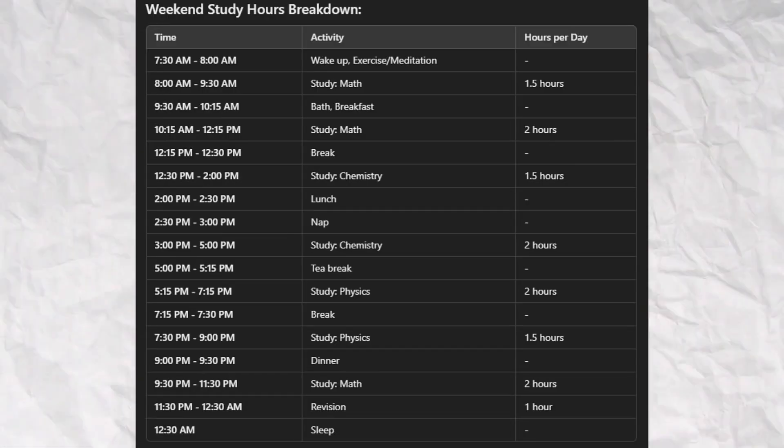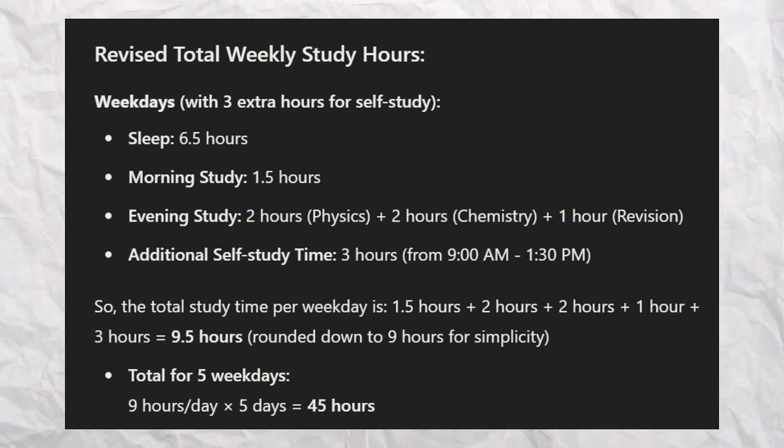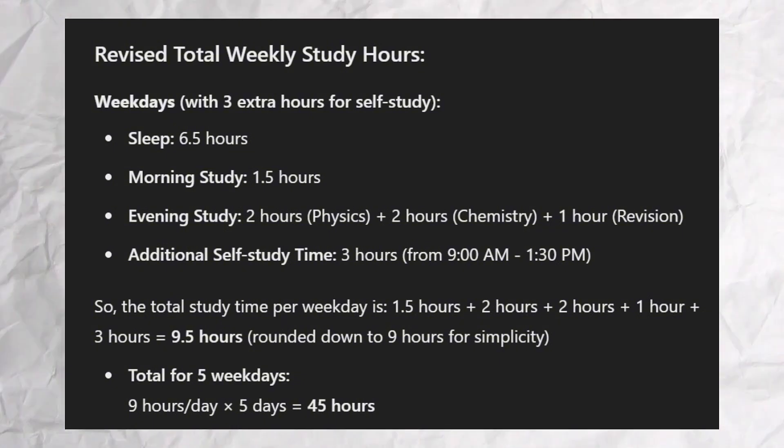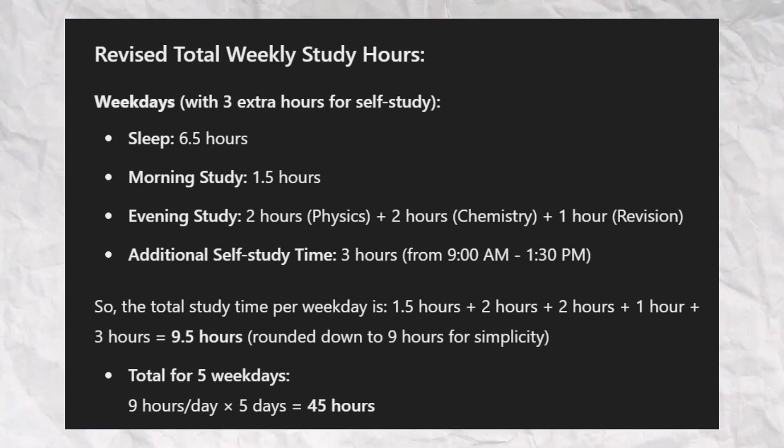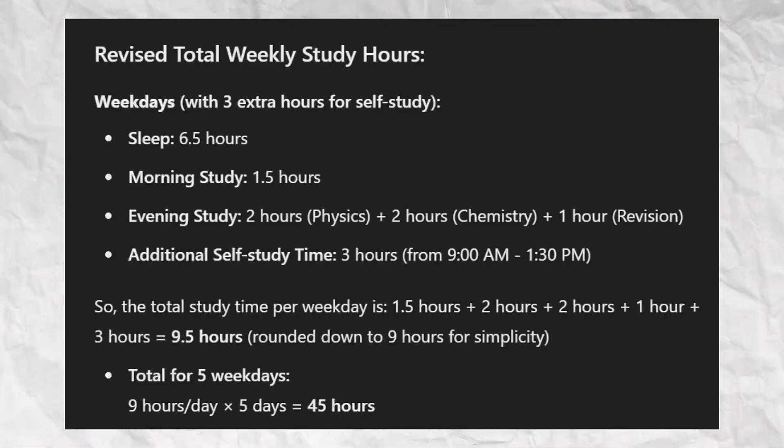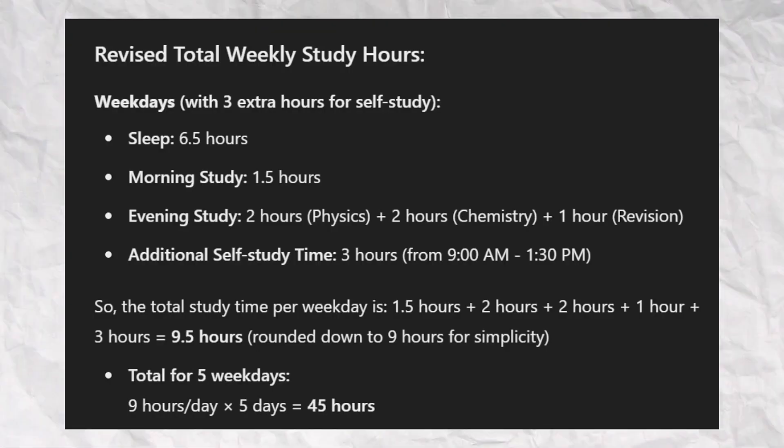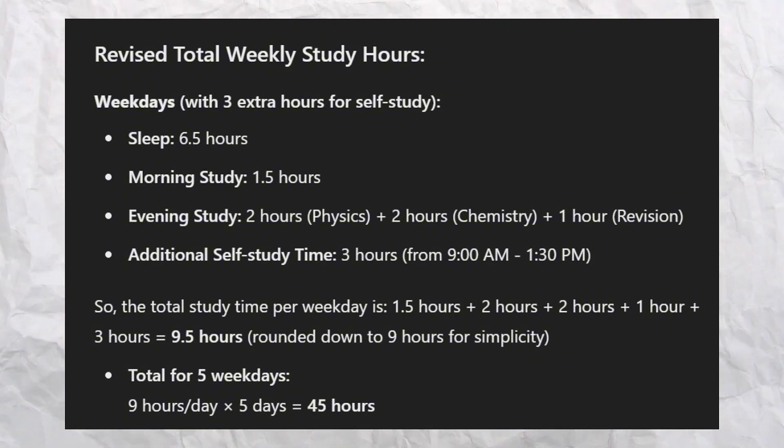For those who do self-study and don't go to any coaching center, the weekends will be the same. I'm assuming your school time is 9 to 1:30, so instead of finishing at 5:30, you get three extra hours. Morning study is the same — one and a half hours. In the evening, you'll study two hours physics, two hours chemistry, one hour revision, and three additional hours of self-study — giving a total of nine and a half hours per day, roughly nine hours for weekdays.